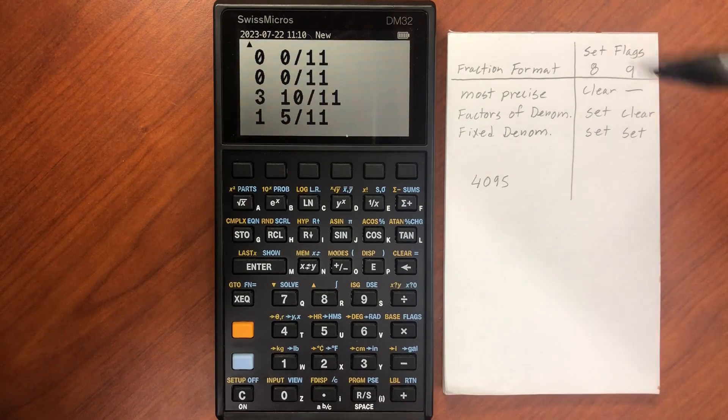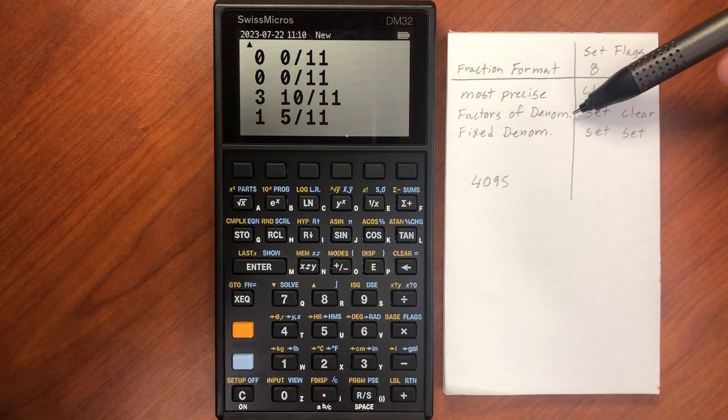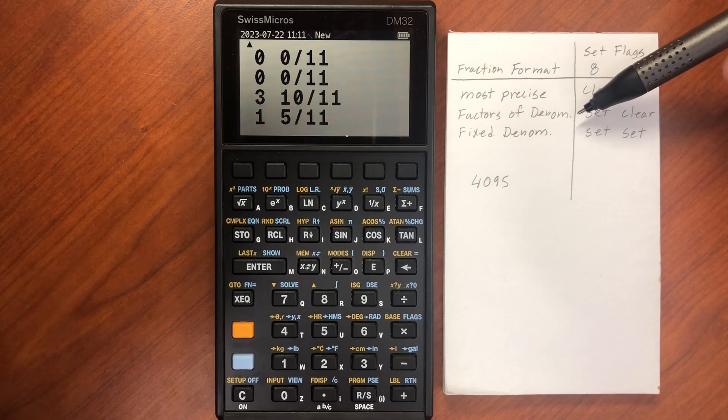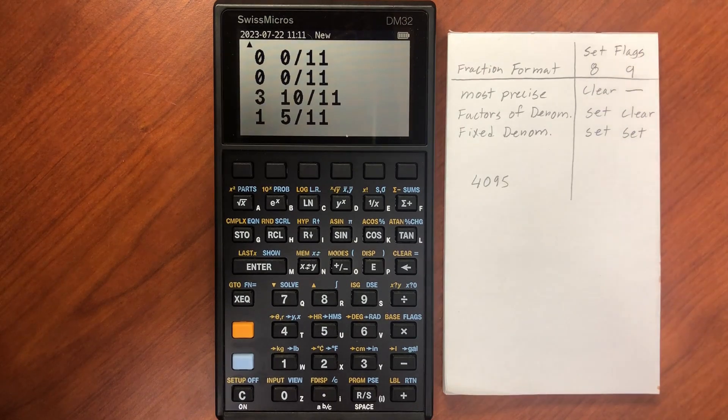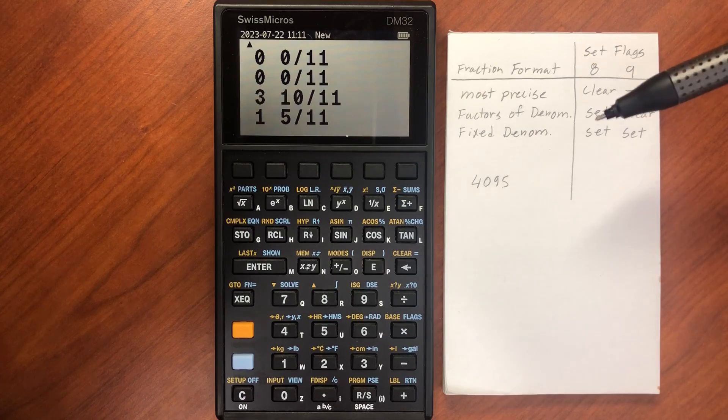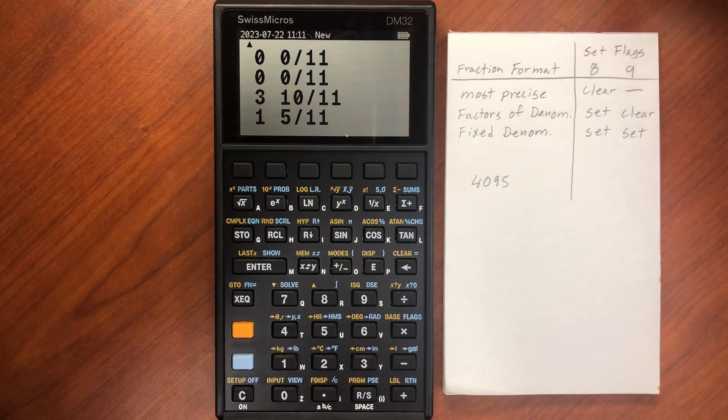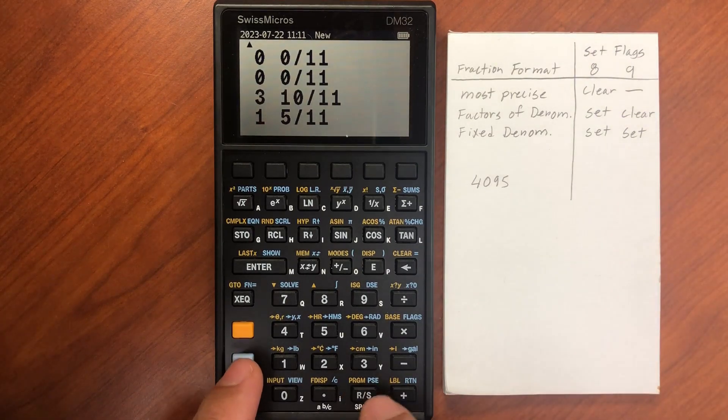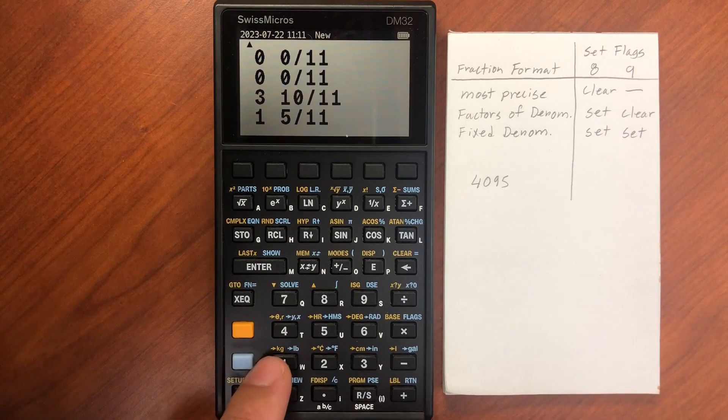One other really cool one is these factors of denominators. So it will set the denominator and also its factors. This is really useful, for example, when you're doing English tape measures, the U.S. standard. So I can set it to 16ths.